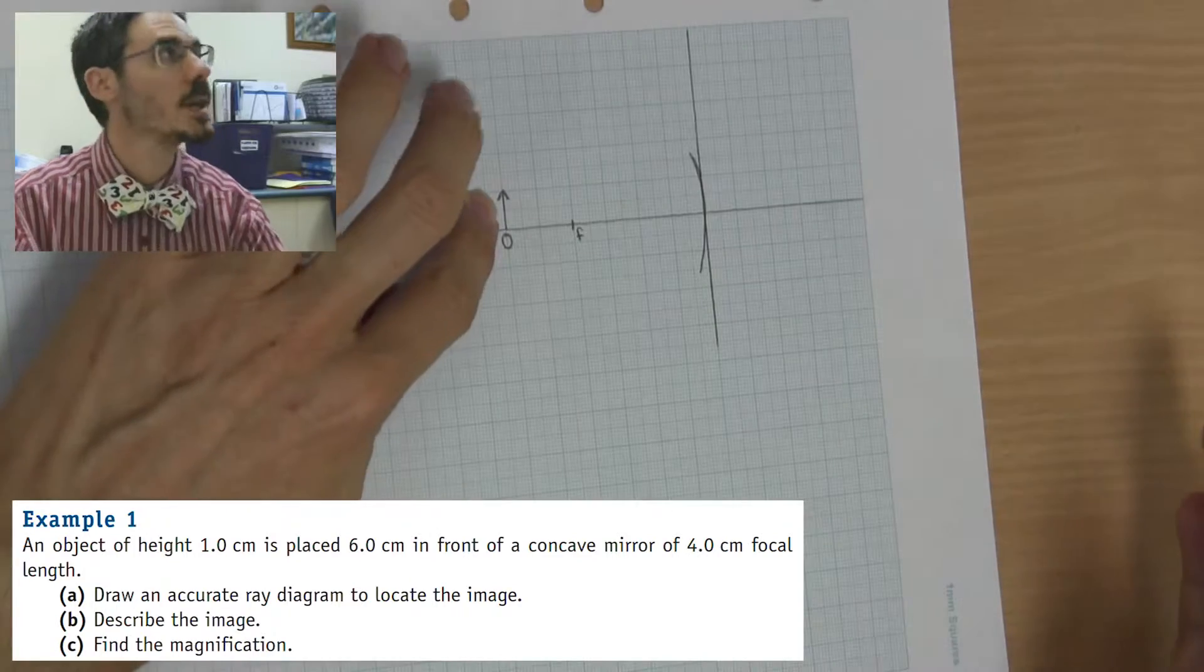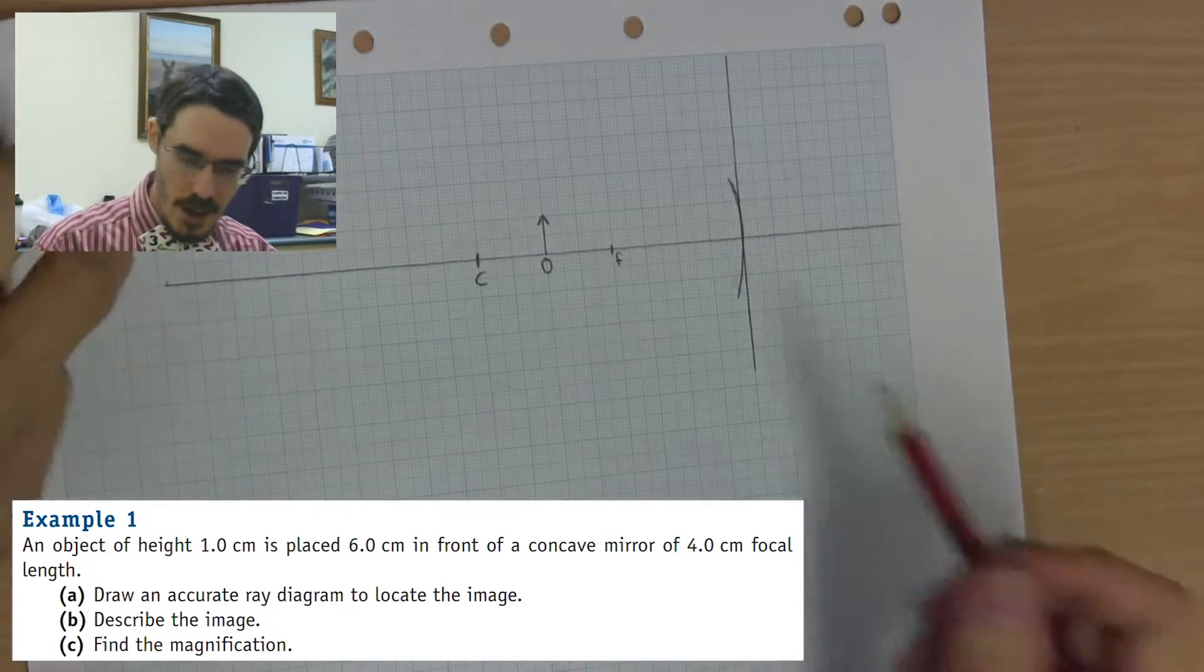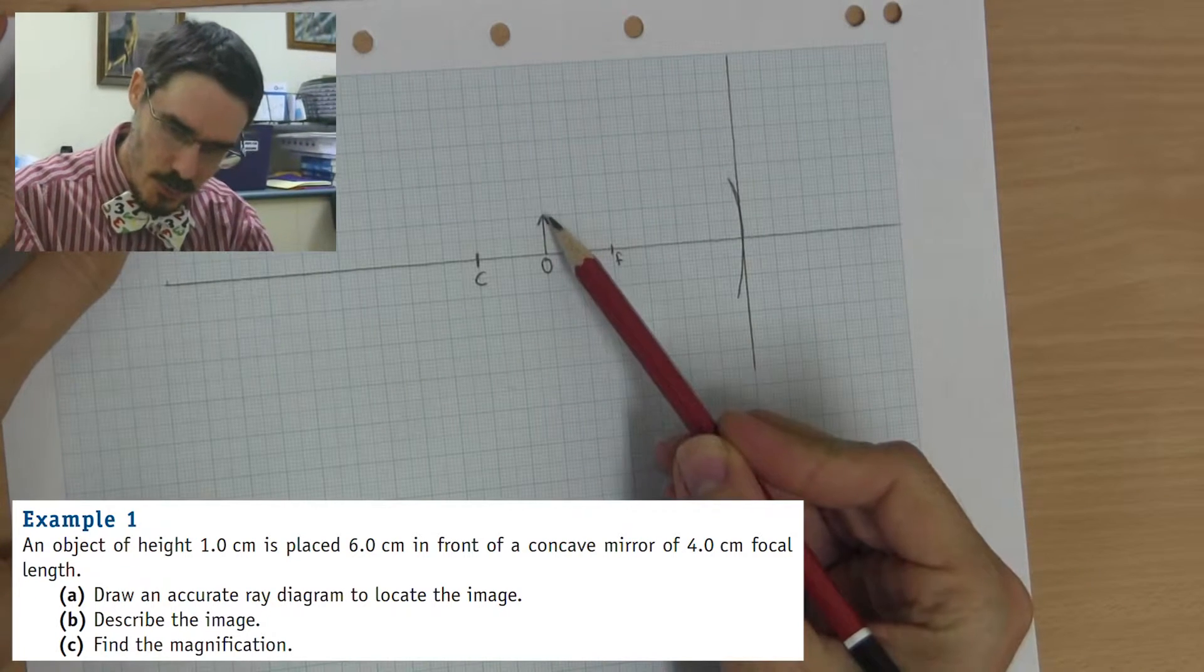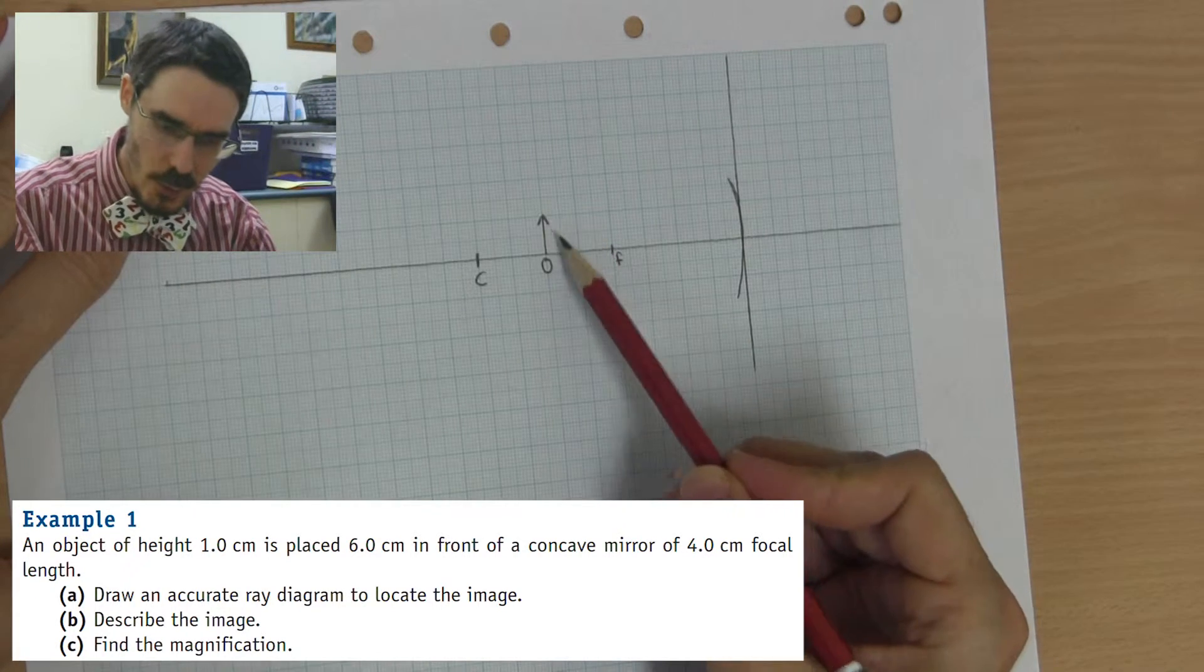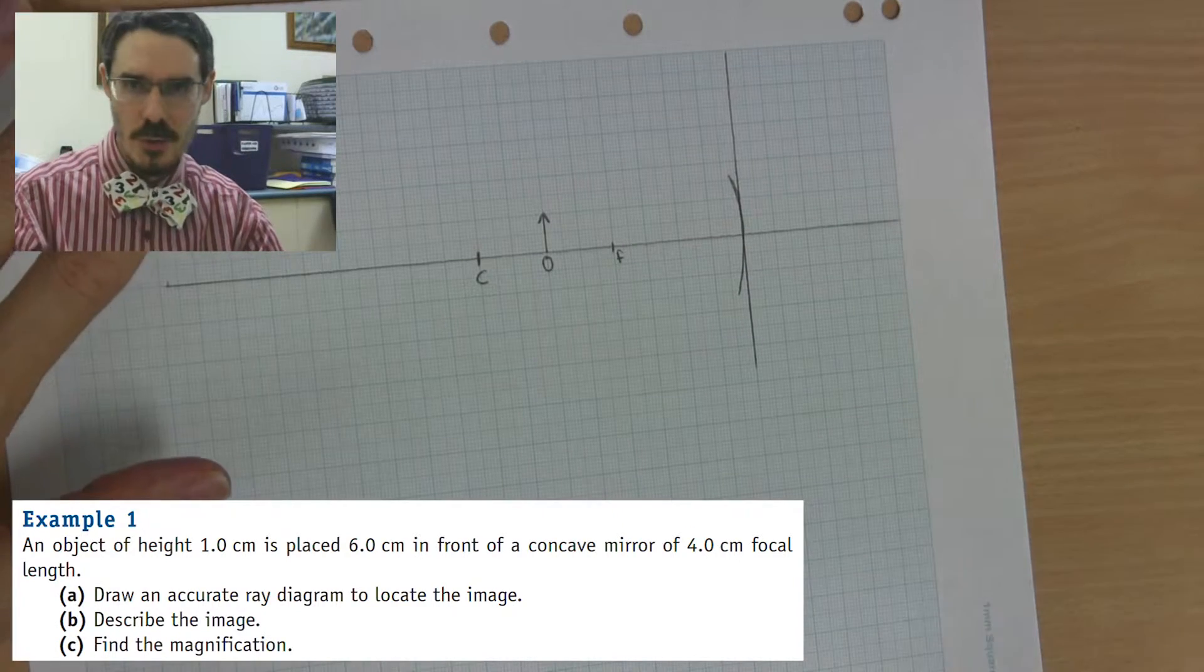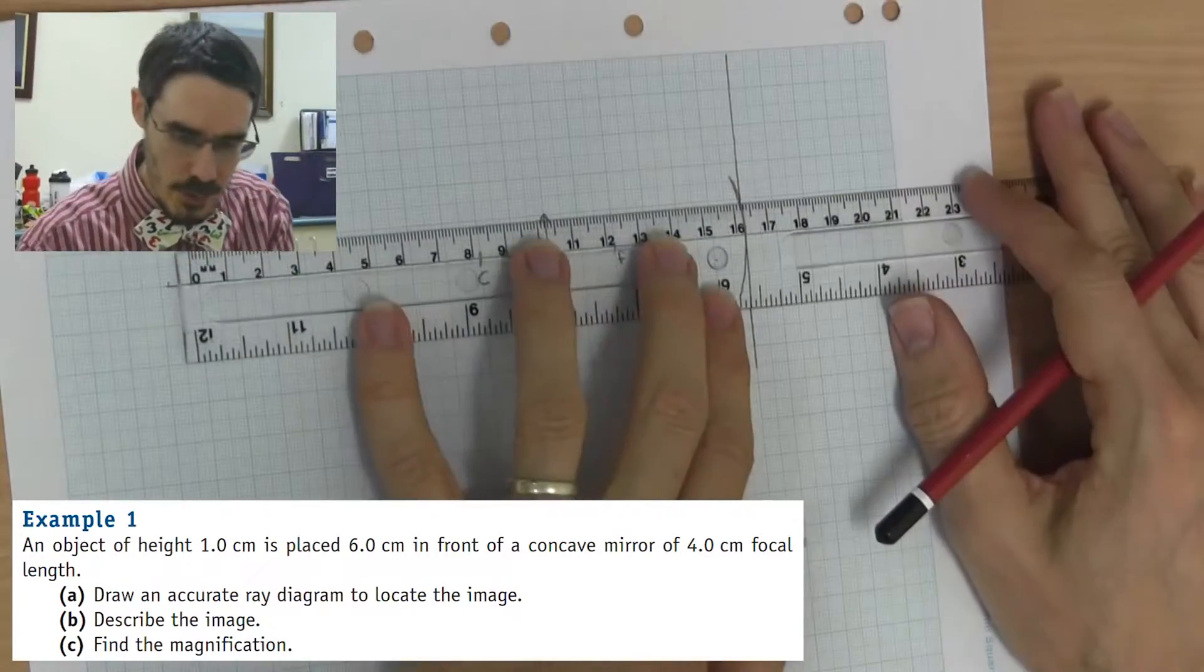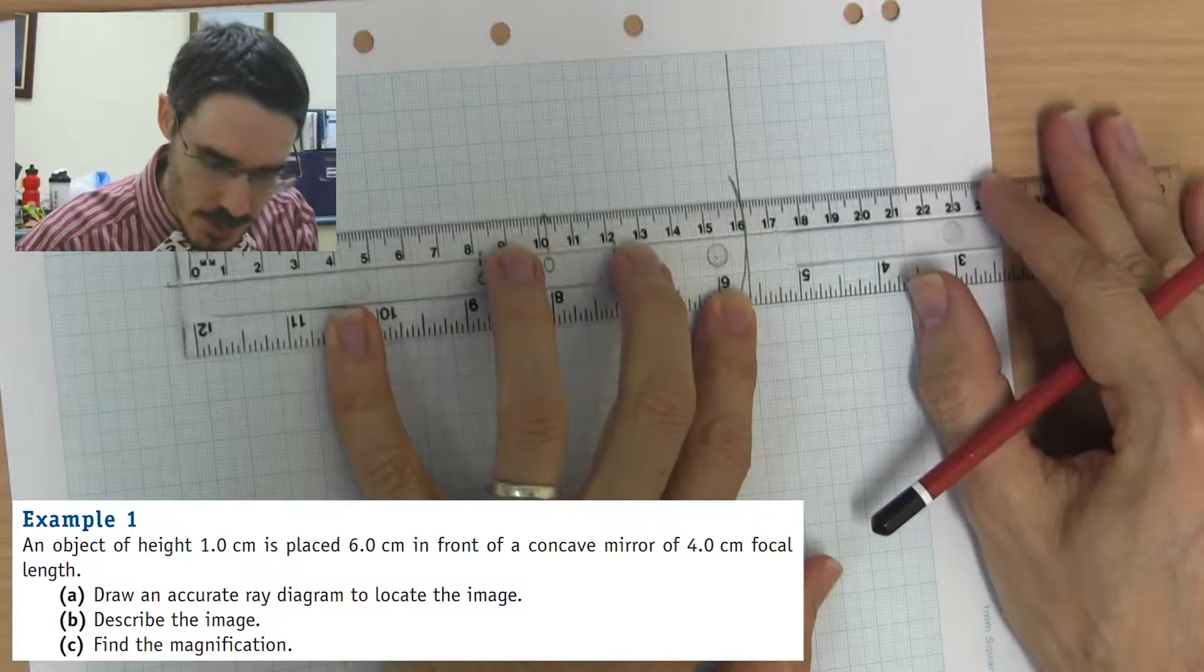I always put an arrow on the object because I want to find out - I'm just looking up to make sure you can still see it on the video - I want to make sure that I know which way up my image is. Now, we're going to draw three rays. In fact, the first two are usually enough, but the third helps us to be sure.